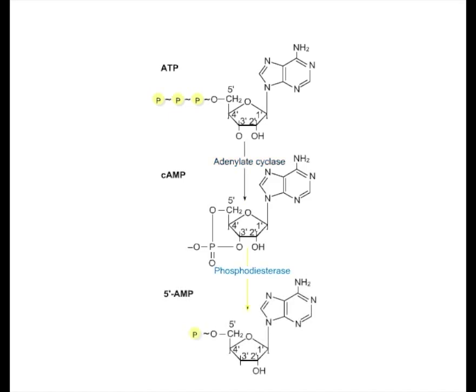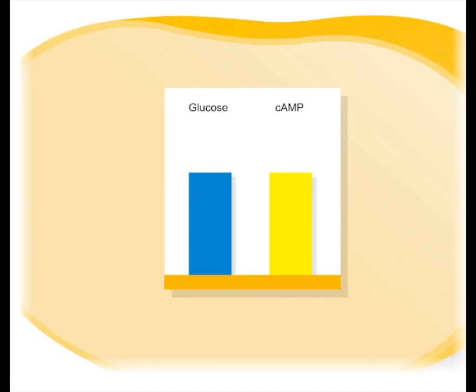Cyclic AMP is synthesized from ATP in a reaction catalyzed by adenylate cyclase. Cyclic AMP is then broken down in a reaction catalyzed by phosphodiesterase. The concentration of cyclic AMP in E. coli is inversely proportional to the concentration of glucose. As the concentration of glucose decreases, the concentration of cyclic AMP increases.